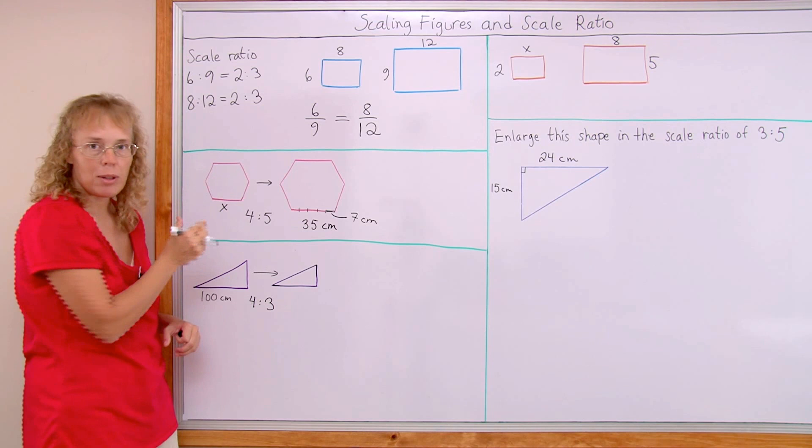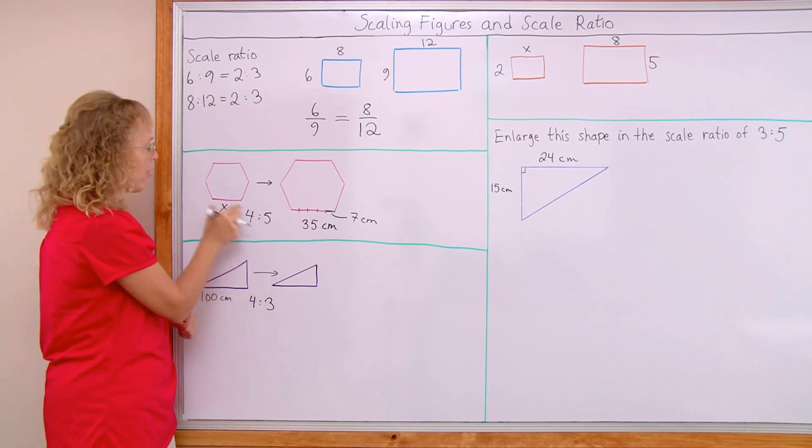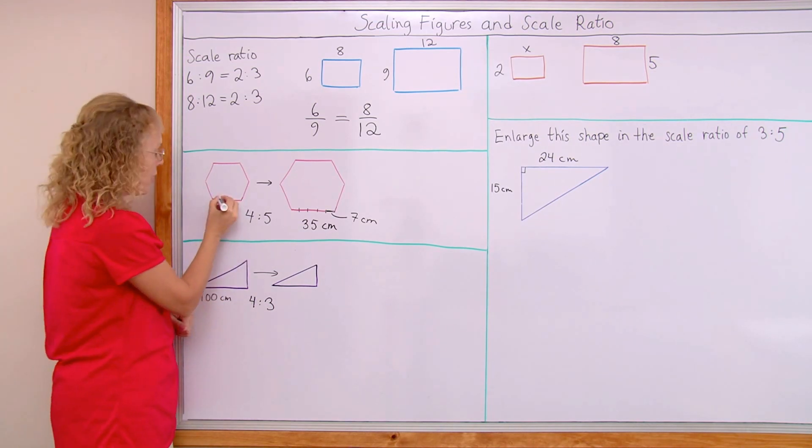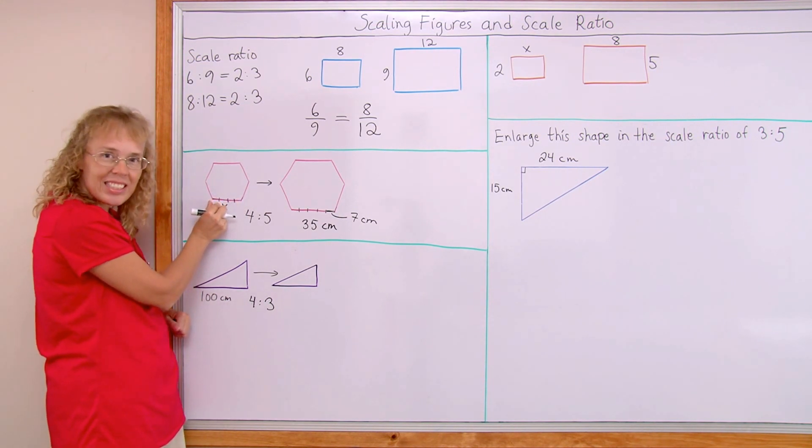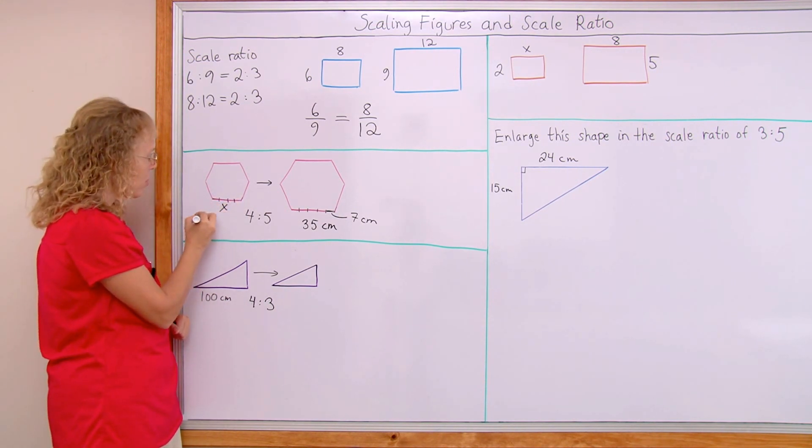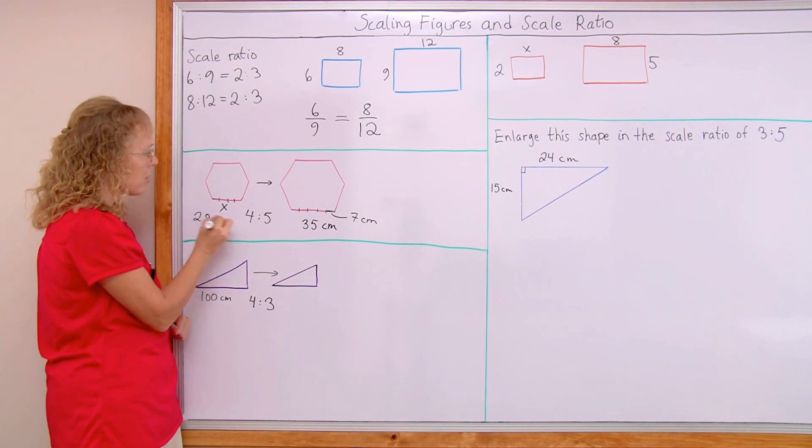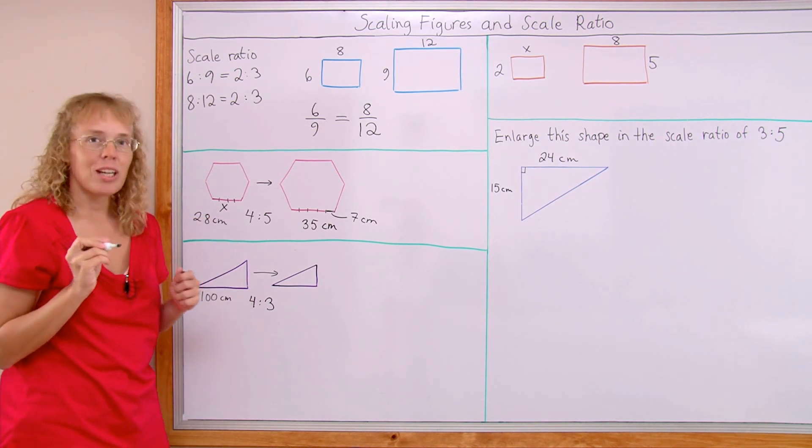Over here in the smaller one, the ratio being 4 to 5, there is only 4 parts here. Each one of them being also 7 cm. So this x must equal 28 cm. You can also write a proportion.